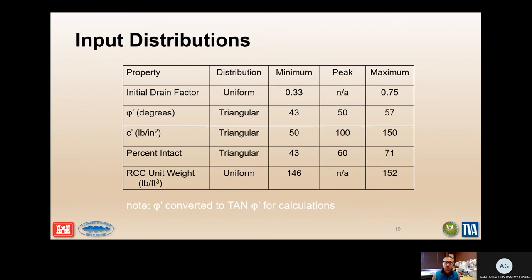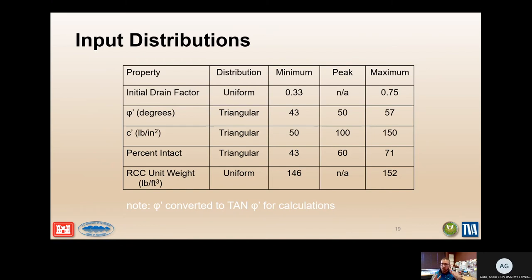This slide shows the probability distributions used as inputs. For the drain factor, we have a minimum of 0.33 and a maximum of 0.75, but no clear best estimate, so a uniform distribution was selected — essentially a flat horizontal line between those two values, since all values should be sampled equally across the range. For RCC unit weight, friction angle (phi), cohesion, and percent intact, a triangular distribution defined by minimum, peak, and maximum was selected to represent the data.